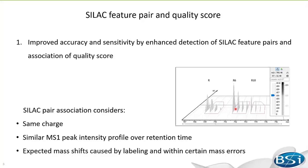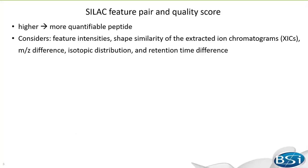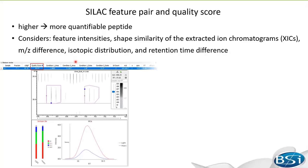The higher the quality score, the more quantifiable the peptide is. I'm going to show you three SILAC feature pairs assigned with high, medium, and low quality scores. The first feature pair has a quality score of 95, which is a good example. You can tell from this figure that this pair has relatively high intensities and a similar elution profile.